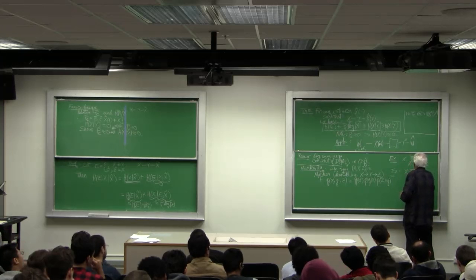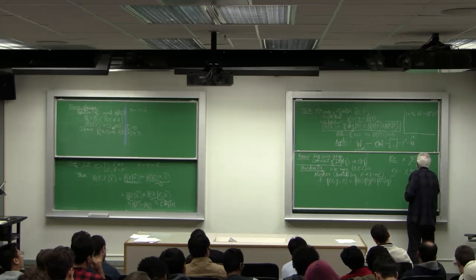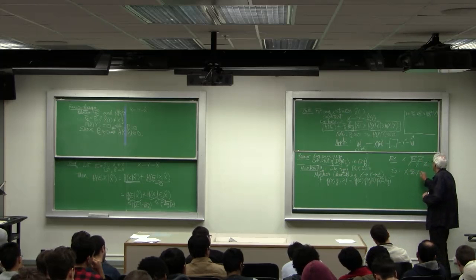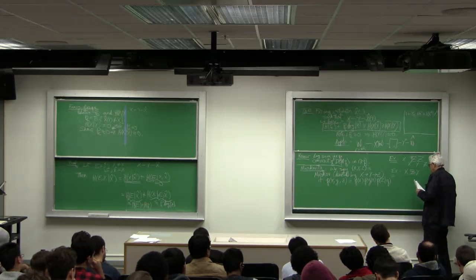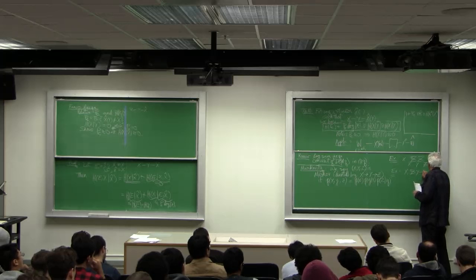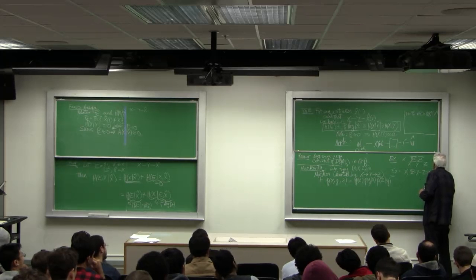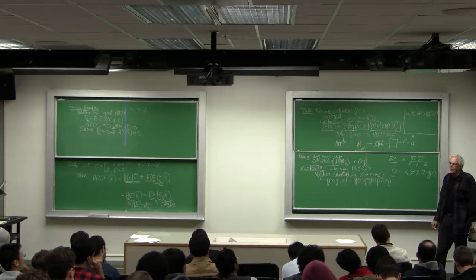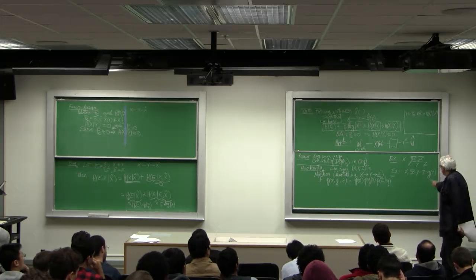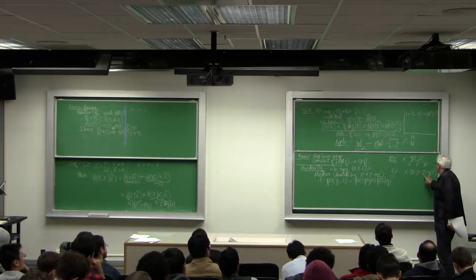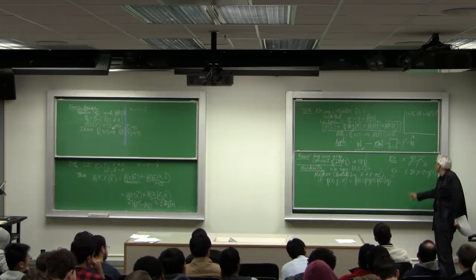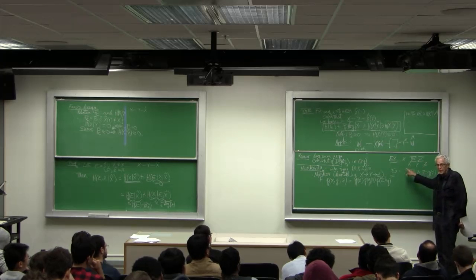X gets corrupted into Y. There's some joint distribution, and Z is equal to g of Y. So this is a deterministic function of Y, which is a special case of a random function.